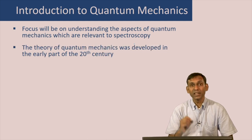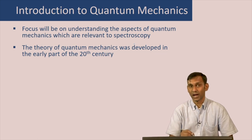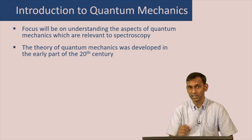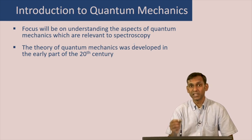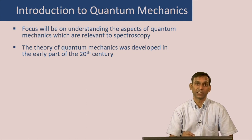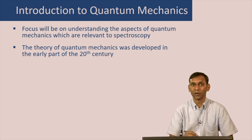This theory of quantum mechanics was developed in the early part of the 20th century, about 100 years back. Before that, in the late part of the 19th century, there were certain experiments like blackbody radiation, photoelectric effect, and the discrete spectrum of atoms like hydrogen, which could not be explained by the existing theory of that time. And that prompted the development of this theory.